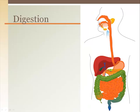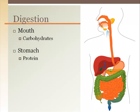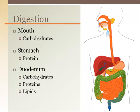Digestion occurs in a number of places along the digestive tract. The mouth first mechanically digests the food into smaller pieces, then with the addition of salivary amylase, it begins the chemical digestion of carbohydrates. The food then travels to the stomach where pepsin begins the breakdown of proteins. Finally, in the duodenum, fat gets broken down and carbohydrates and proteins are finished off.